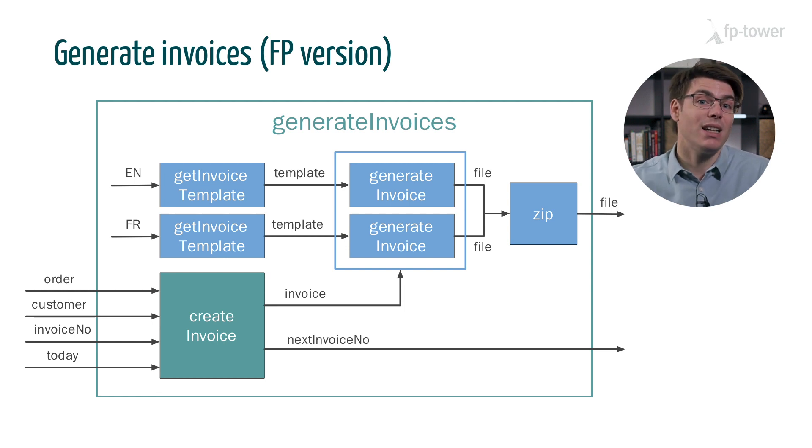This design is 100% functional. All functions are total, deterministic, and they don't perform any actions. Writing into a file is an action, but we don't really do that here. When I say that generate invoice produces a file, I mean that it creates an immutable binary object representing a file, and you can find this kind of data structure in several libraries such as Akka or scodec. Rather than attribute this success to FP, you might argue that this is a good design because we use sound software practices.